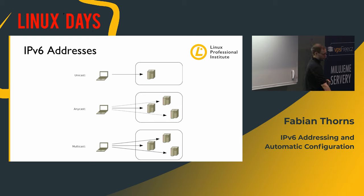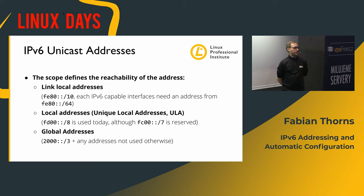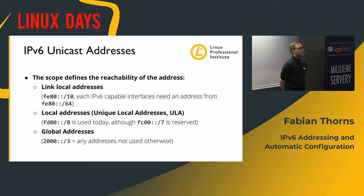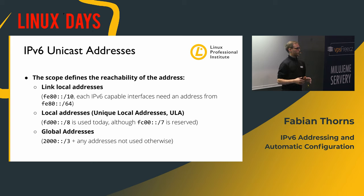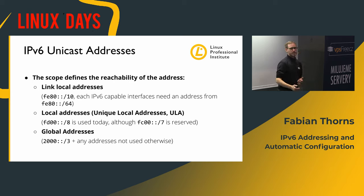Besides those three kinds of addresses, we have various scopes. For unicast addresses there are three scopes. We have link-local addresses - they start with FE80. Those addresses cannot be routed, never ever. Their entire scope is the link, so they can only reach devices on the same link. Every IPv6-capable interface needs to have one address out of the FE80/64 block. Those addresses are used to bootstrap everything else - the entire way IPv6 nodes connect to each other is based on link-local addresses.